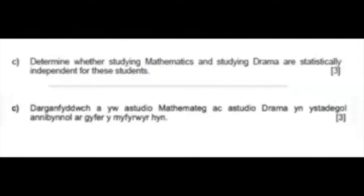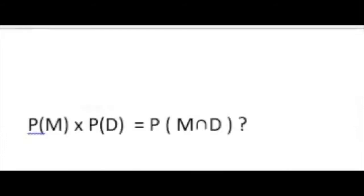Now part C: determine whether studying mathematics and studying drama are statistically independent for these students. We check: does the probability of M times the probability of D equal the probability of M-intersection D?